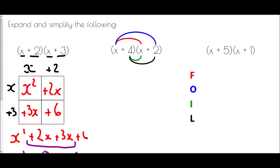Next we have a method I call the claw. We use loops going across the top and under the bottom to make sure we multiply everything by everything else. The first loop: x times x is x squared. Then x multiplied by plus two is plus two x. Then plus four multiplied by x is plus four x. And finally plus four multiplied by plus two is plus eight.